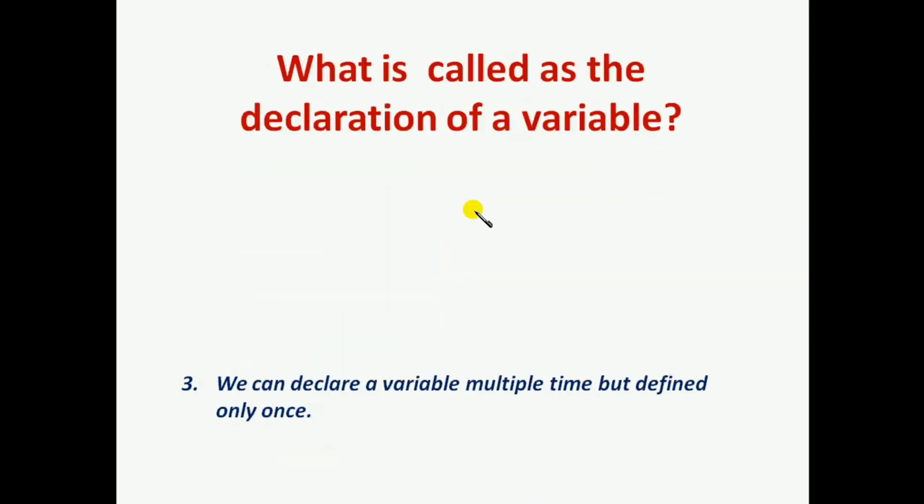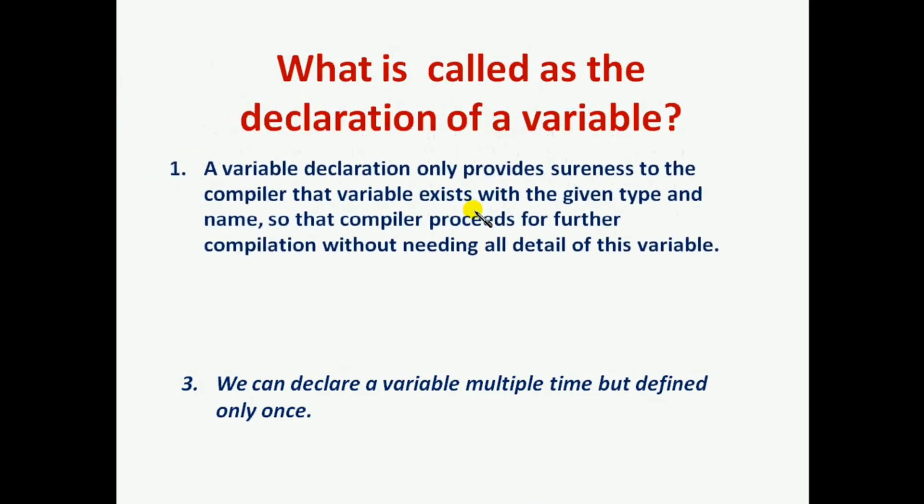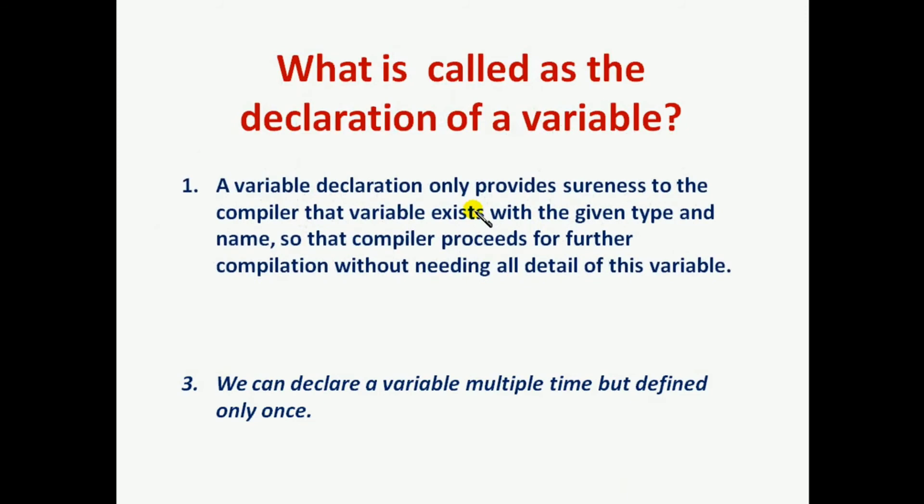What is called the declaration of a variable? A variable declaration only provides assurance to the compiler that the variable exists with the given type and name, so that the compiler can proceed for further compilation without needing all details of this variable.